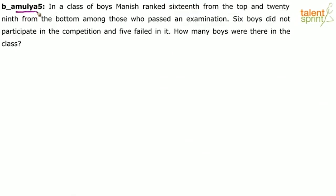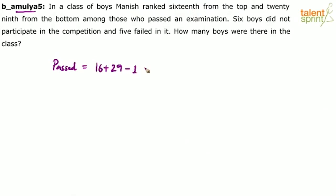This is very simple. In a class of boys, Manish ranked 16th from the top and 29th from the bottom among those who passed. So how many passed totally? We can find out the total number of passed students because Manish has passed, and his rank is 16th from the top and 29th from the bottom. So total passed will be 16 plus 29 minus 1, which is 44.